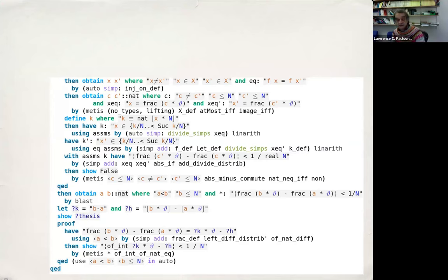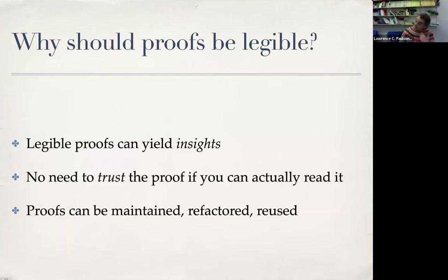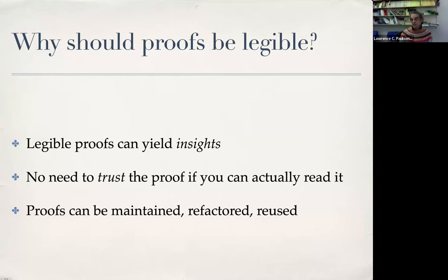Why am I making such a big deal about legibility? If you can read your proof, it's not enough to just say 'true' — you want to know why it's true, and maybe there are relationships between proofs of different results. As a computer scientist, it's nice to grab things from one proof and put them in another, or look at the proof and say 'this construction is a general one — I can turn it into a lemma or a small theory.' But to do any of those things, you need to be able to eyeball your proof. And if you don't trust computers and software — which you shouldn't really — you can read them. I trust the proofs from the computer because they are fiendishly hard to get working.